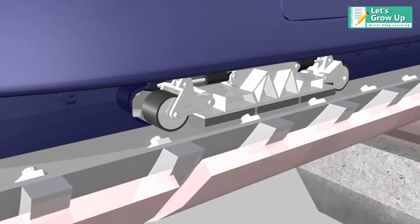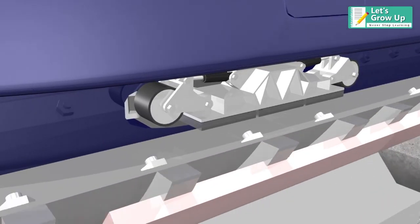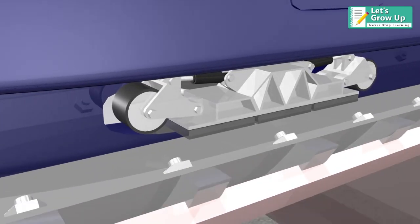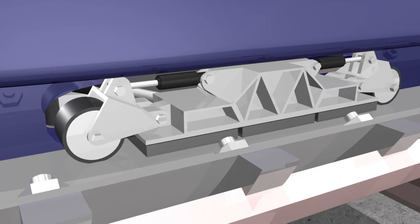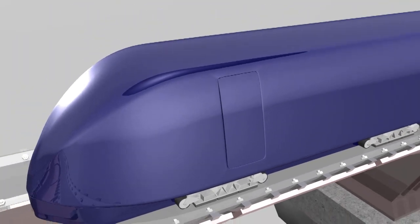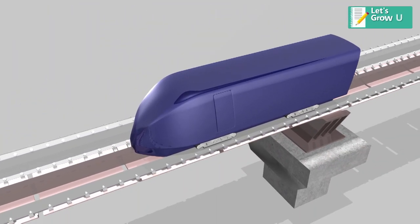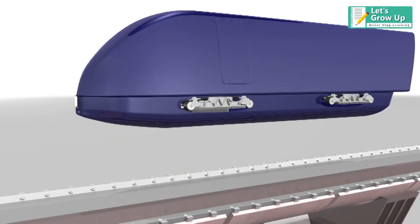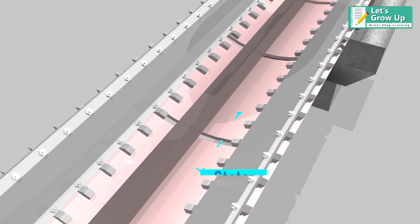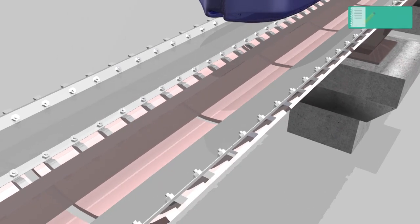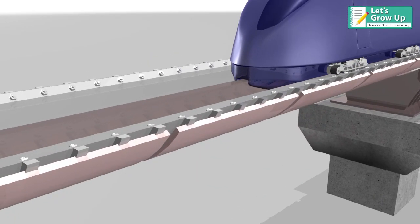Each capsule is accelerated with the help of a mechanism called magnetic linear accelerator. Each accelerator consists of a similar mechanism of motor, in which the rotor is fixed at the bottom of the capsule, and stator is fixed on the wall of the tube. Hence, the combination of these stator and rotor gives the momentum to the capsule for traveling at high speed.